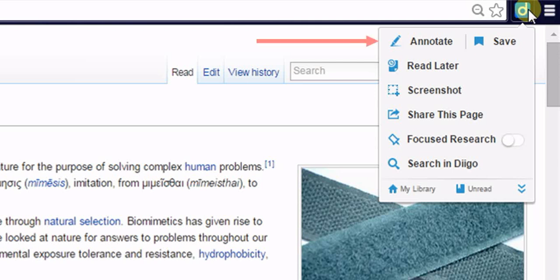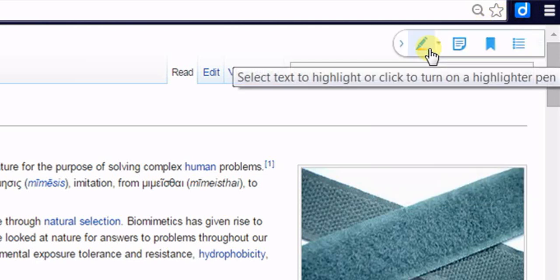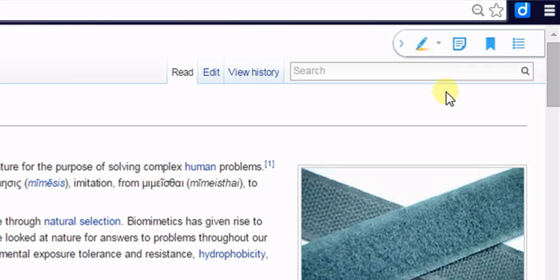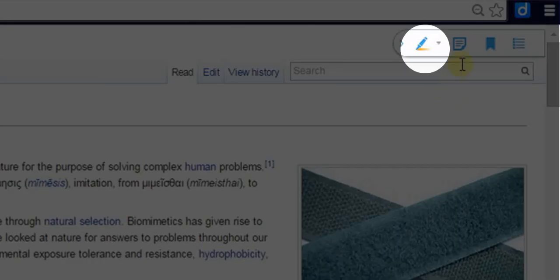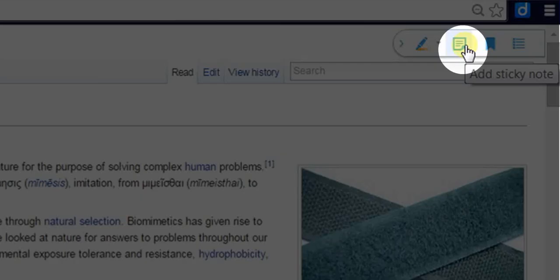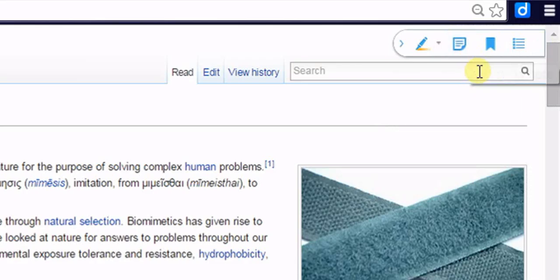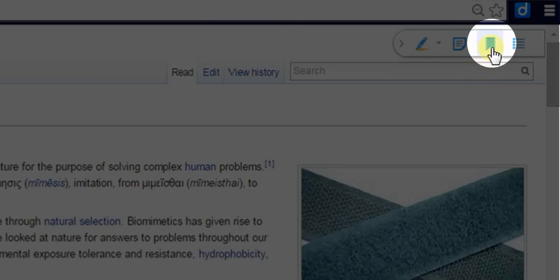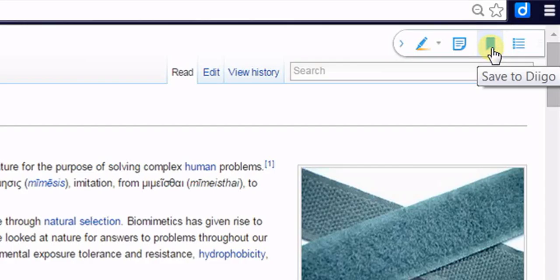If you click on first option, that is annotation, an icon strip will appear on the web page you have opened. The first option is to highlight the selected text. Second is to add sticky notes. Third for saving. And fourth to see annotations added on the current page.